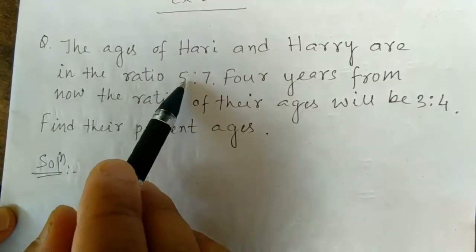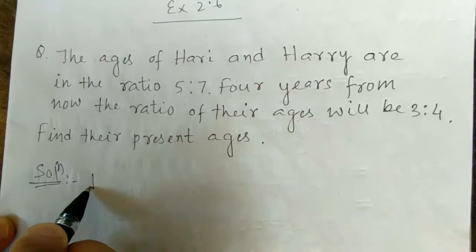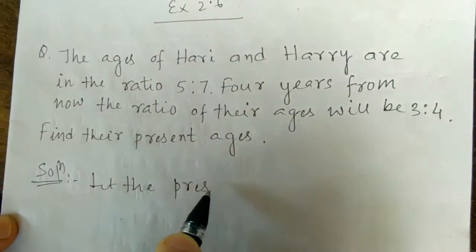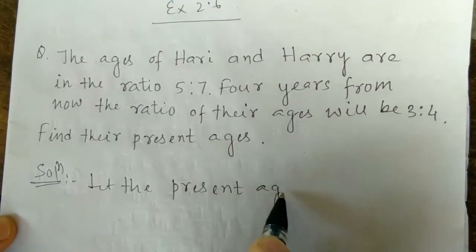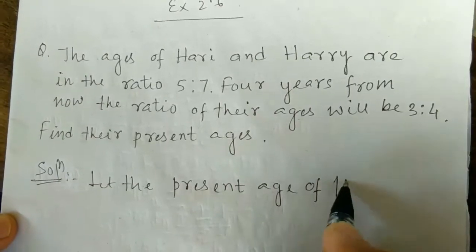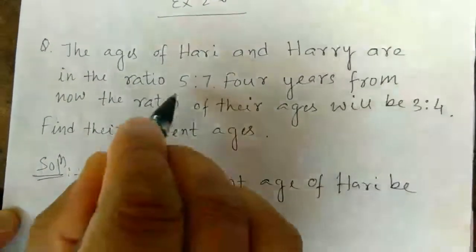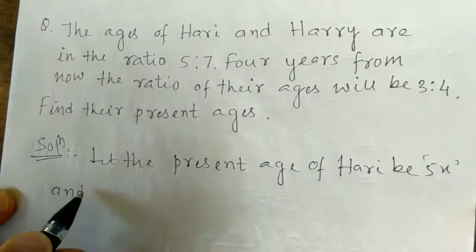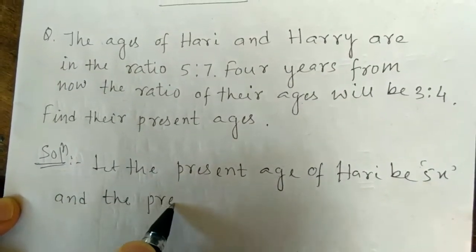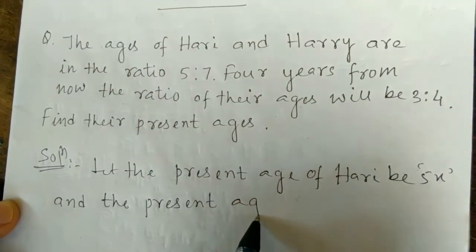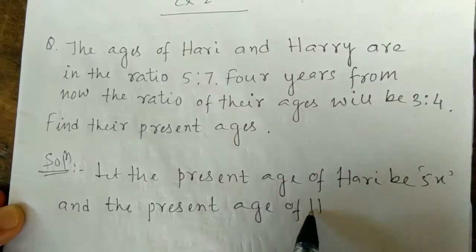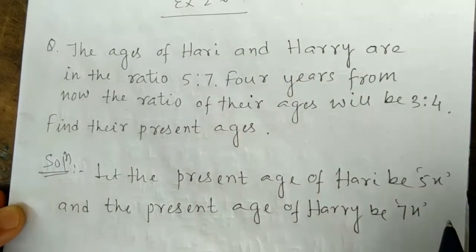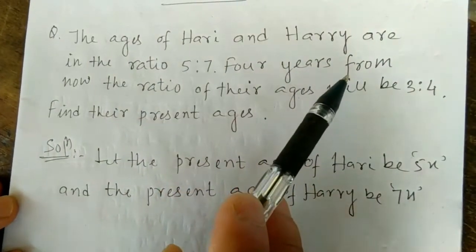The ratio of their present ages is given as 5 is to 7. So let the present age of Hari be 5x and the present age of Harry be 7x.